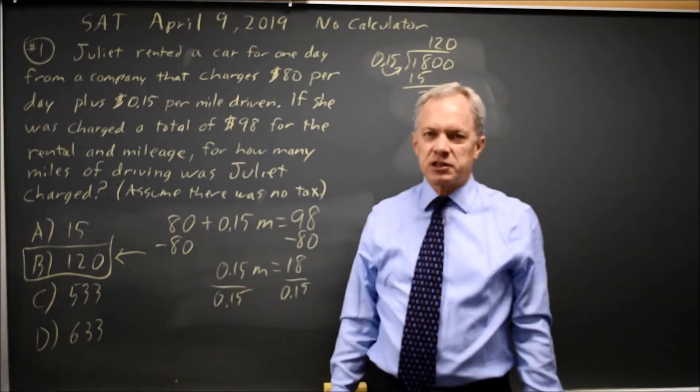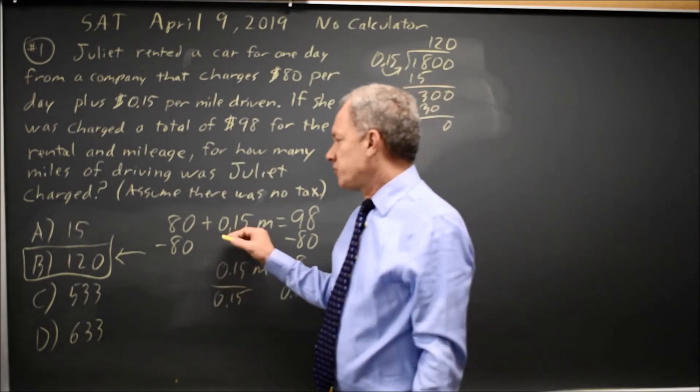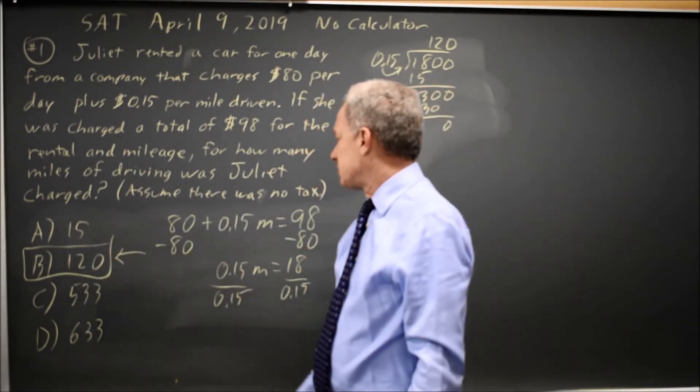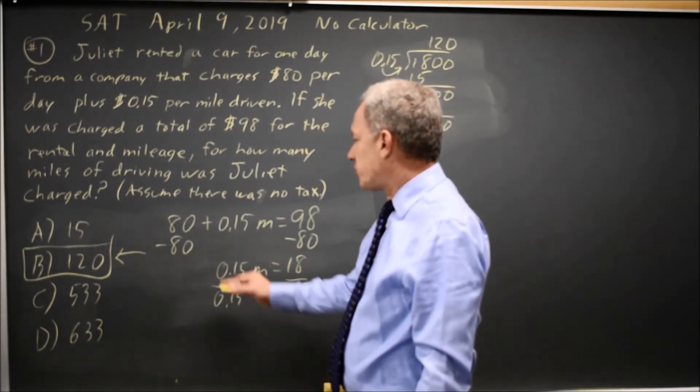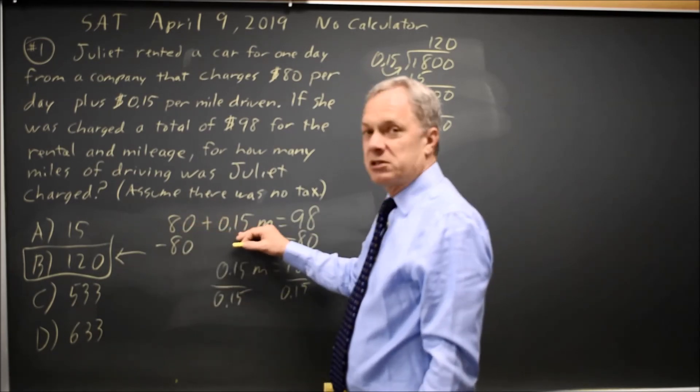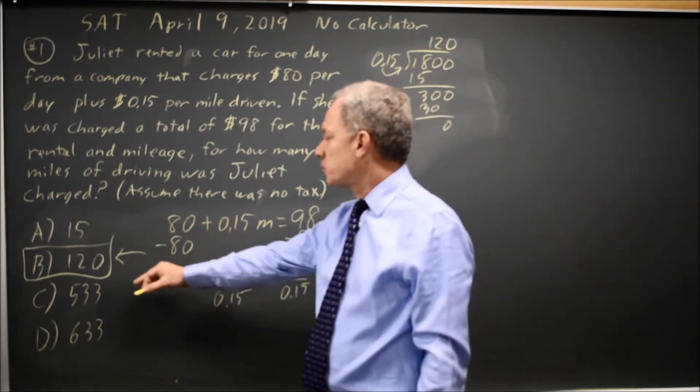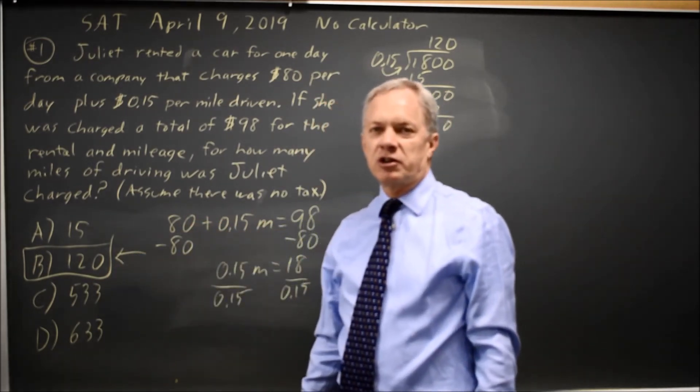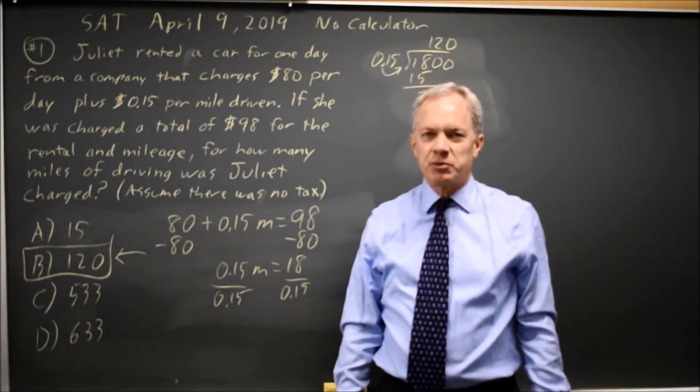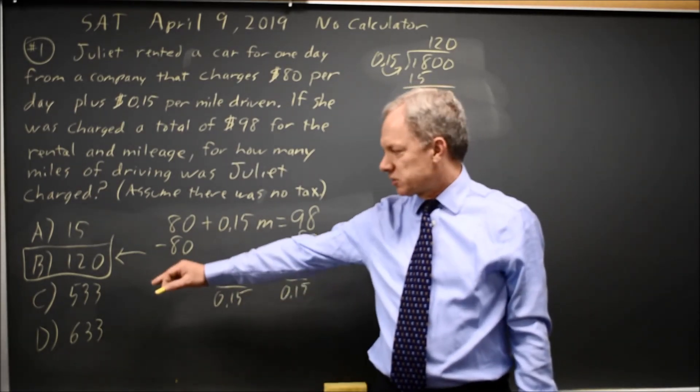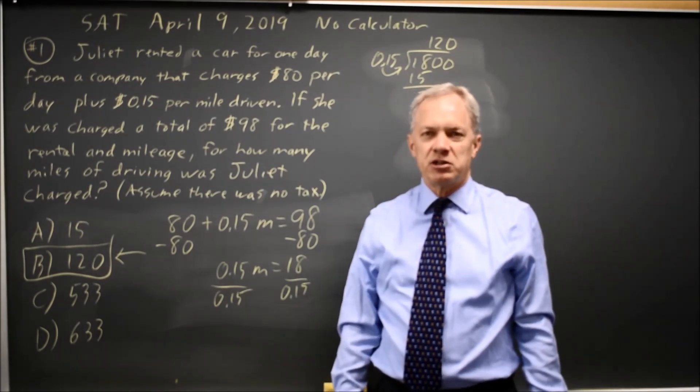Third, you could solve this by substituting in each number. Remember, 15 cents per mile times 15 miles is $2.25, so that would be $82.50, which is not correct. 15 cents per mile times 120, you could figure that out, and you would find that it's $18, which would make it the correct answer. And choices C and D are way too large.